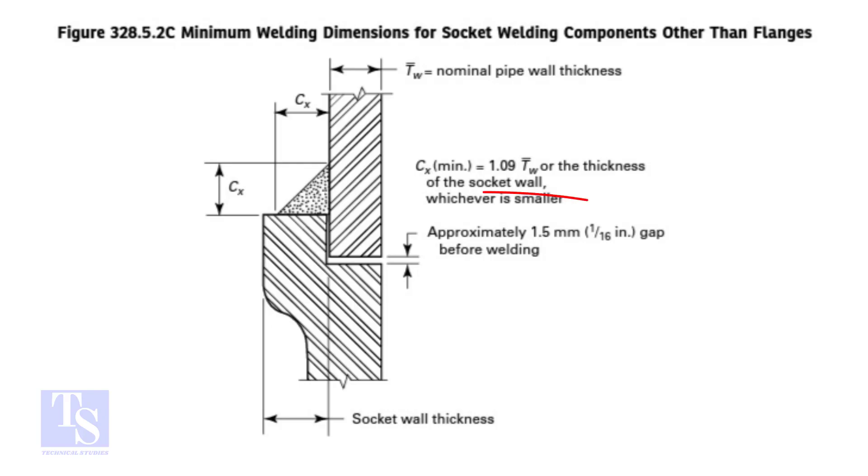In the drawing, a gap is shown between the fitting and the pipe end. The purpose of this clearance in a socket weld is usually to reduce the residual stress at the root of the weld that could occur during the solidification of the weld metal, and to allow for the expansions and contractions that happen during service.